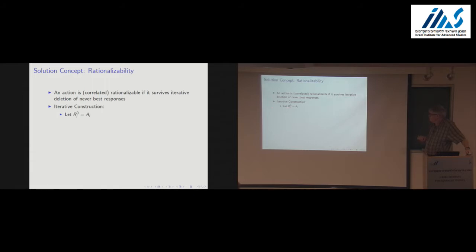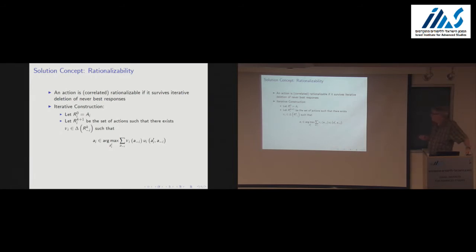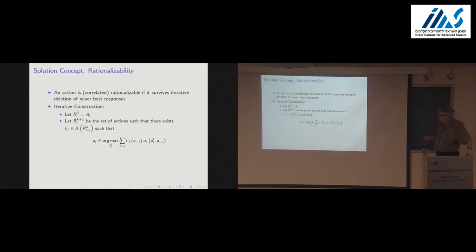Formally, we do an iterative construction of rationalizable actions. We start out saying all actions are zeroth-level rationalizable — write R-sub-i-superscript-0 for the zeroth-level rationalizable actions of player i. At each round, we inductively define k-th-level rationalizable actions: R-i-k-plus-1 is the set of actions such that there exists a probability distribution over the action profiles of others that haven't been deleted, and action A-i is a best response to that conjecture. We keep doing that deletion — assuming finite actions, it terminates and we get the rationalizable set.